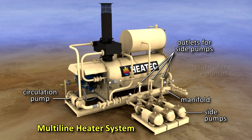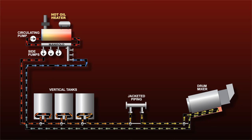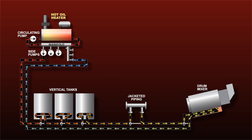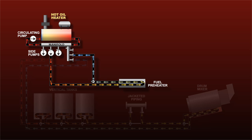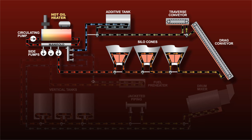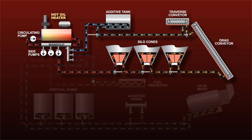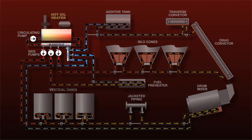The manifold has outlets and returns for multiple circuits — it can have two to four outlets and returns. Each outlet serves as the hot oil source for an independent circuit with its own side pump. Each side pump circulates the oil through a circuit with less resistance because it has fewer components. After the oil transfers its heat to the components, it returns to the manifold.